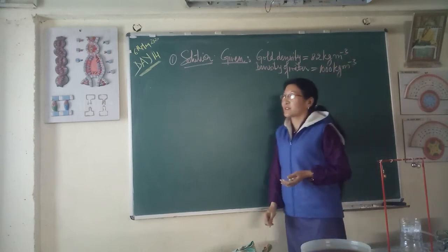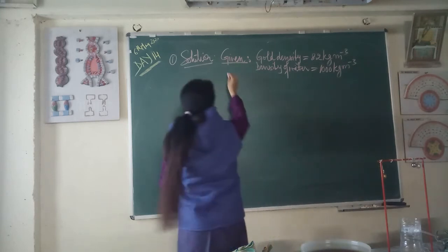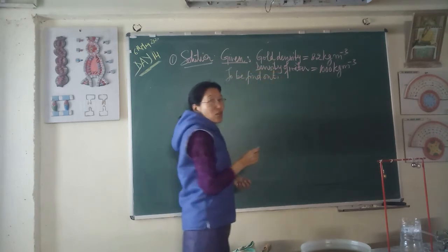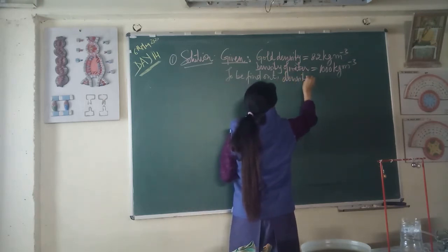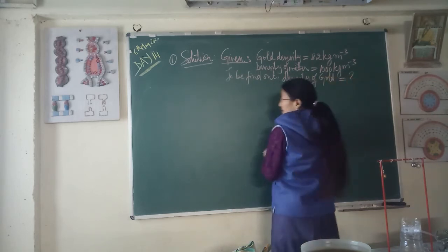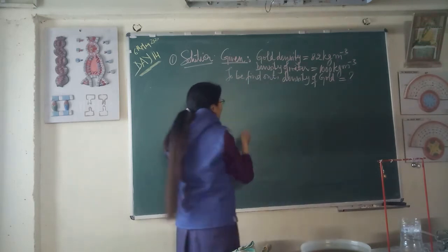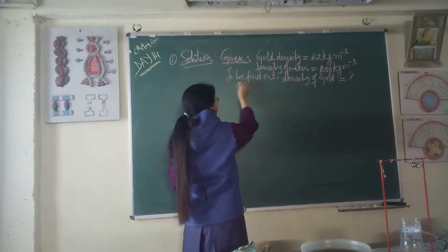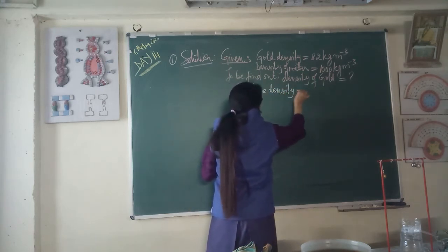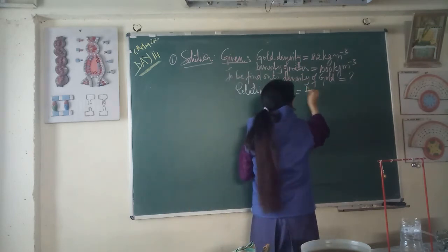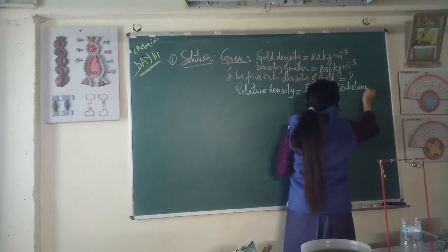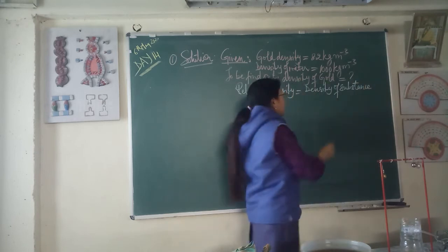Okay, what is the density of gold? We need to find the density. Relative density is equal to the density of the substance divided by the density of water.